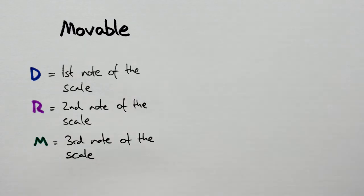So you can see that our Solfa is moveable. Do will always be on the 1st note of the scale, Re always the 2nd, Mi will always be on the 3rd note of the scale and so on. We call this system moveable Do.